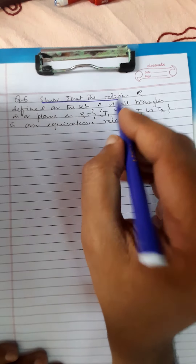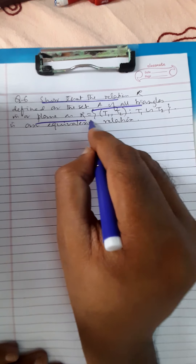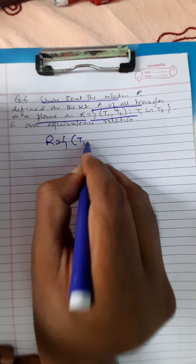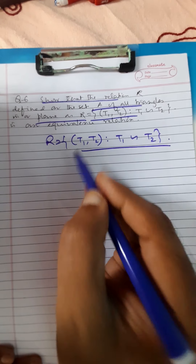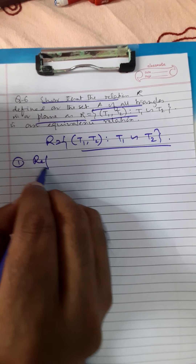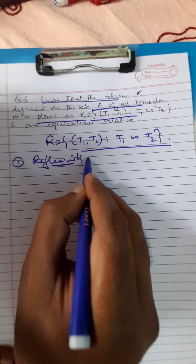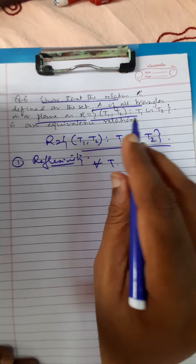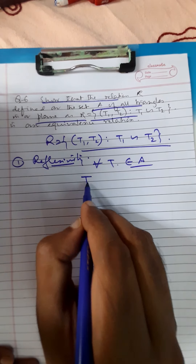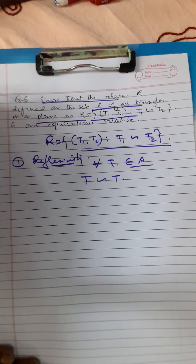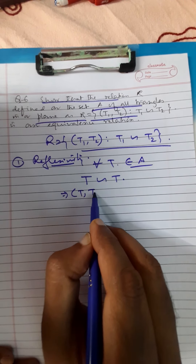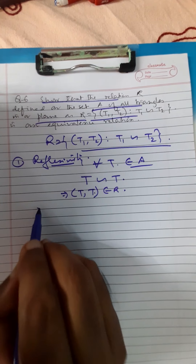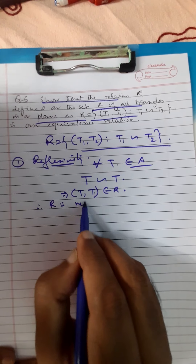Last question for today's class: A relation R is defined on the set A of all triangles in a plane by R = {(t1, t2) such that t1 is similar to t2}. For reflexivity: for all triangles t belonging to A, t is similar to itself. Each and every triangle is similar to itself. It implies t comma t belongs to R. Therefore, R is reflexive.